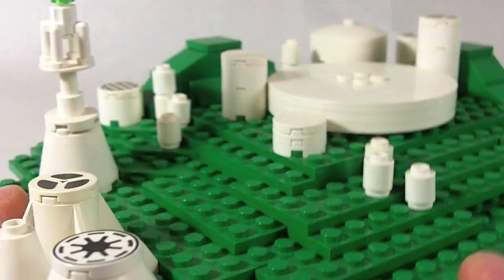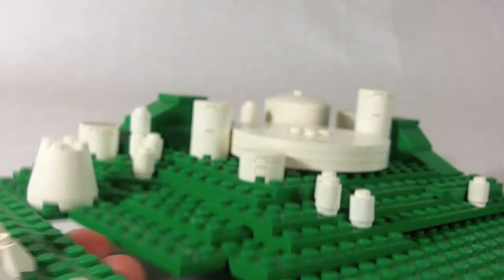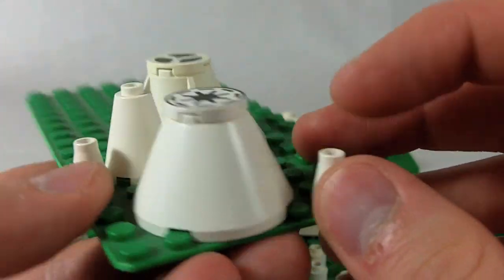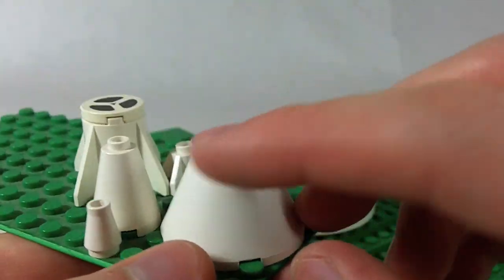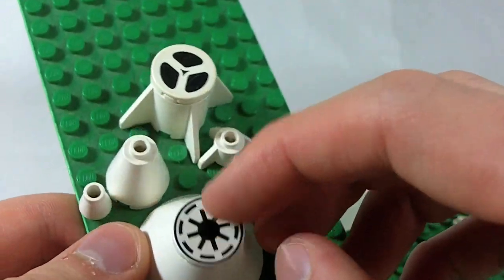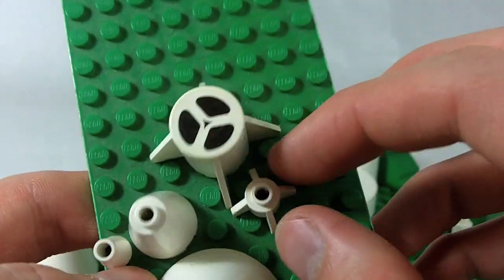Most of the buildings on here are just conical white pieces. This is just a cone. This is one of those big cones and I've put some cool two by two tiles on top. I think that's a Star Wars film reel.